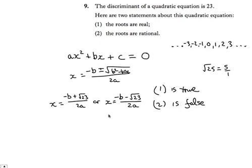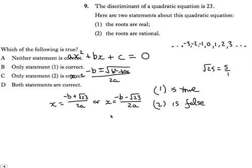So let's look at the choices: neither statement is correct; only statement one is correct; only statement two is correct; both statements are correct. We've established that only statement one is correct — the other is false. So choice B is the correct answer.